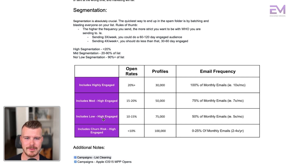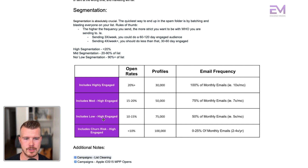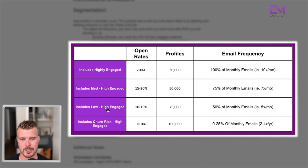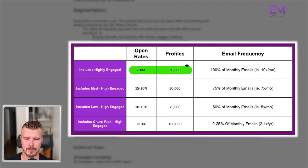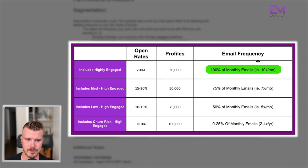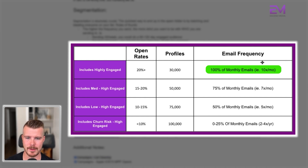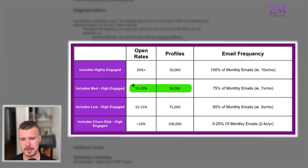Here's a helpful chart we use to consider where people might be in their buying journey and how frequently we should be sending emails to those specific people. Highly engaged people typically get a 20-plus percent open rate. There might be 30,000 profiles in that highly engaged audience. The email frequency — they get pretty much all the emails we're sending. So if we're sending 10 emails total per month, they would get 10 times a month.